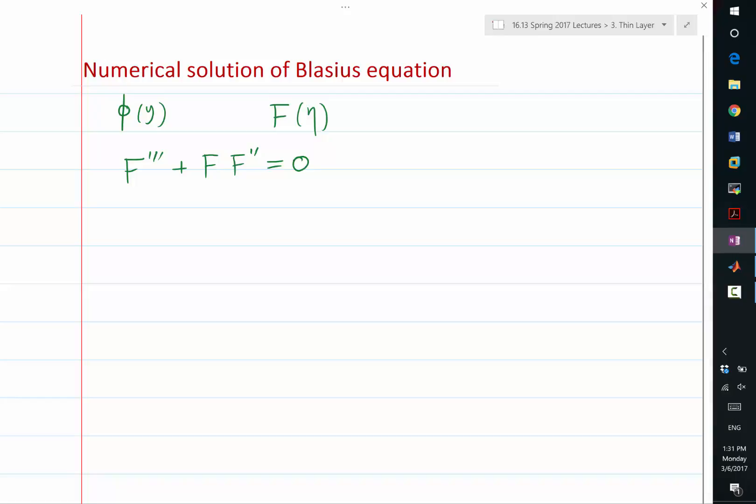And what are the boundary conditions we supplied? f of zero equal to zero. So that's almost an arbitrary choice. We just define the stream function to be zero, and up to a constant value, the stream function does not affect the flow field at all. So that's just an arbitrary choice to anchor the stream function. What else?